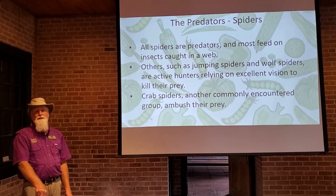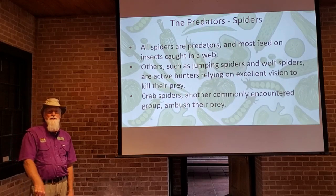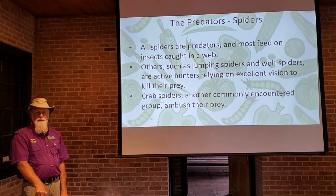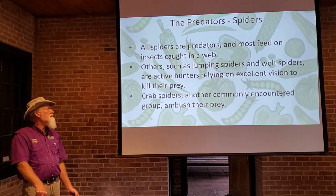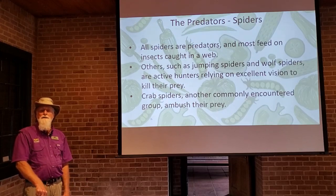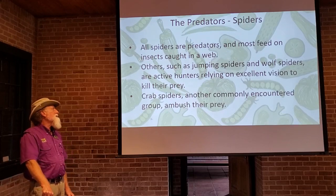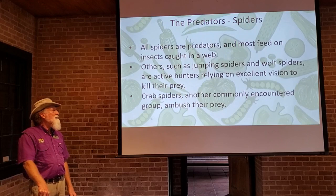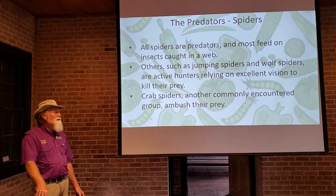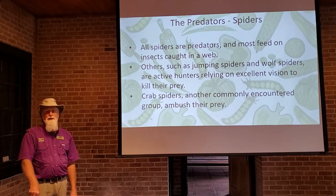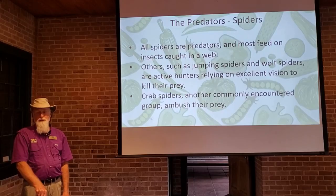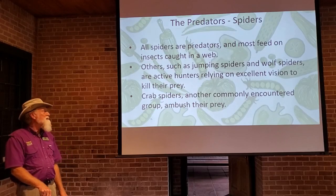It's been reported that jumping spiders can detect prey approaching up to 18 feet away. Crab spiders are another commonly encountered group, and those ambush their prey — they lie in wait for prey to come near them, then attack and devour it.